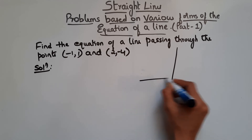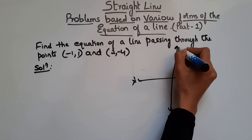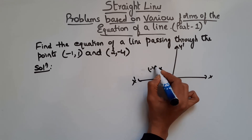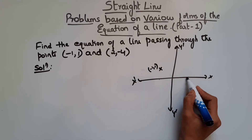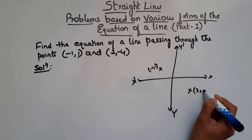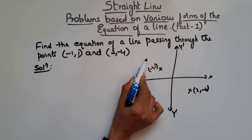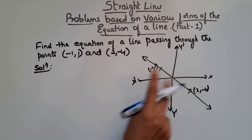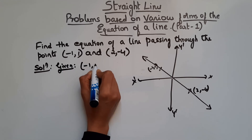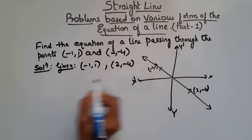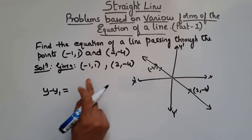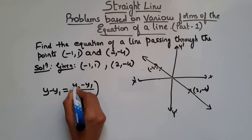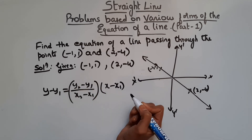Let's draw the axes. We have point (-1, 1) and point (2, -4). We have to find an equation of a line that passes through these two points. When two points are given, we can go for two-point form. The formula is y - y1 = [(y2 - y1)/(x2 - x1)](x - x1), where (-1, 1) is (x1, y1) and (2, -4) is (x2, y2).